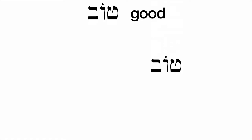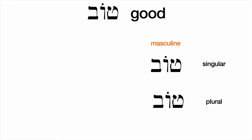Tov is fine for something that is masculine and singular. But if we wanted to describe not just one masculine thing but several, to make a plural we would take tov and add the letters im — tovim — which is appropriate for something plural and masculine.